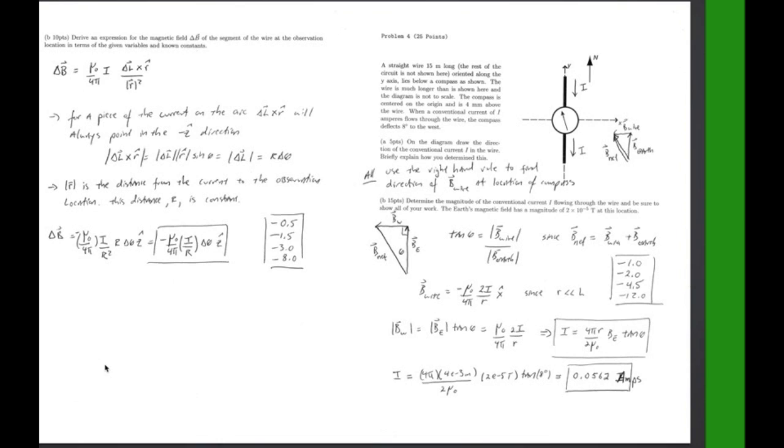On the diagram draw the direction of the conventional current I in the wire. Knowing that the compass is above the wire and using the right-hand rule we can actually find that the current is flowing down through the wire.